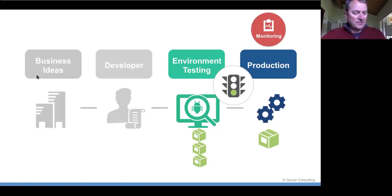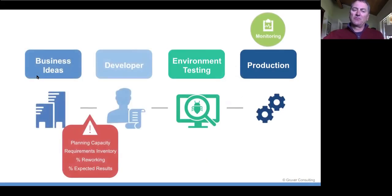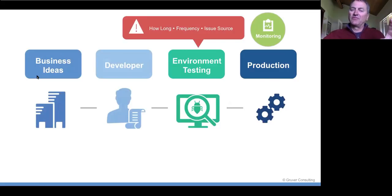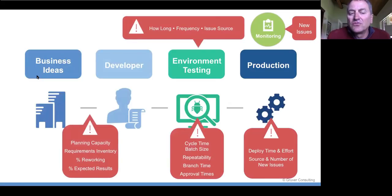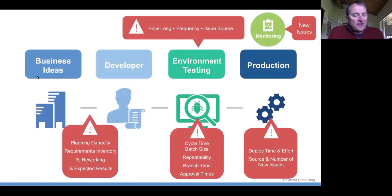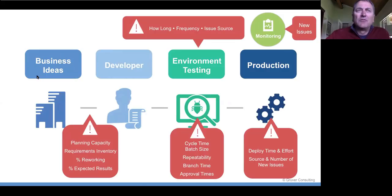We've talked about a lot of different things, and you can't really do all of these things at once. I tend to go into organizations and talk to them about metrics around each of these pieces to understand where the biggest bottlenecks and issues are. We talk about metrics around planning capacity, environments, testing, release, and monitoring. We look across those with everyone on the team to get a good feel for where the biggest bottlenecks are and what improvements will have the biggest impact on the business.